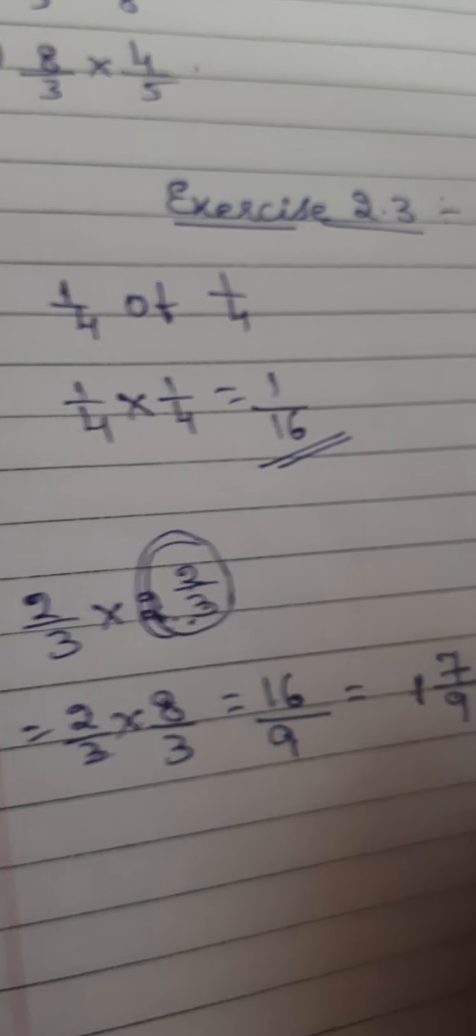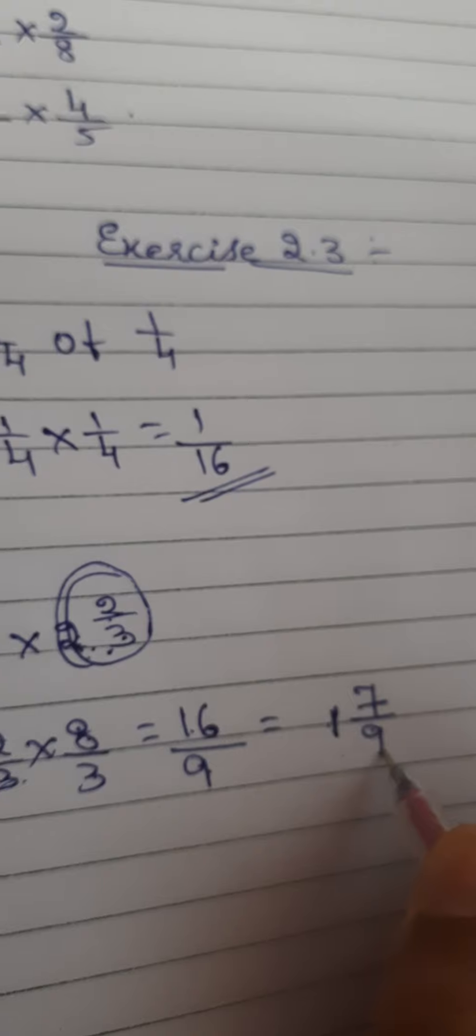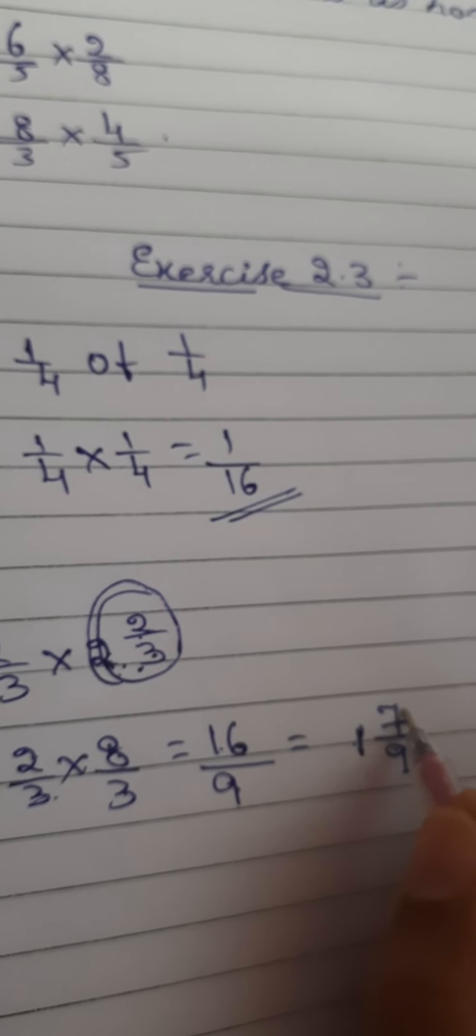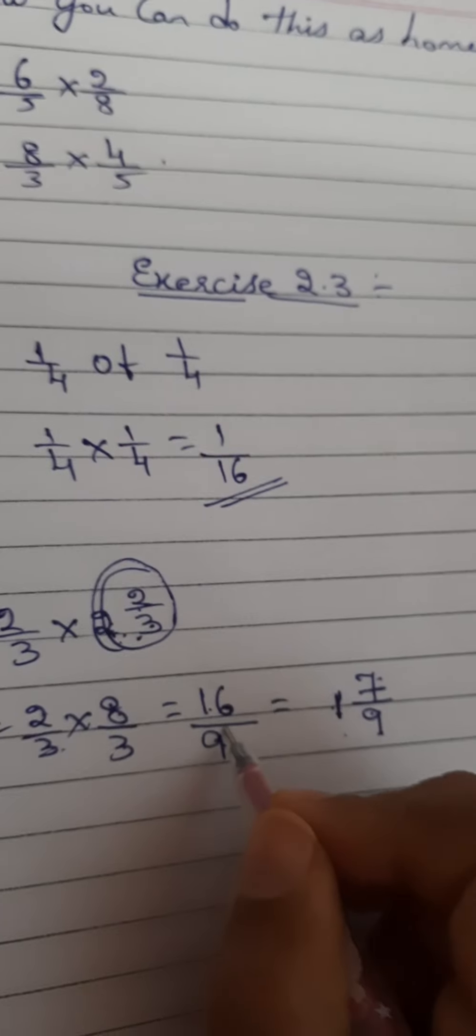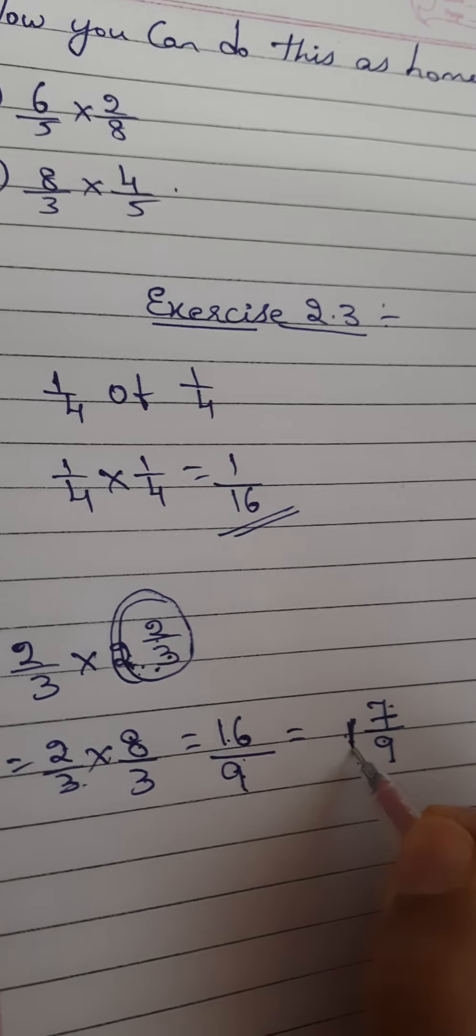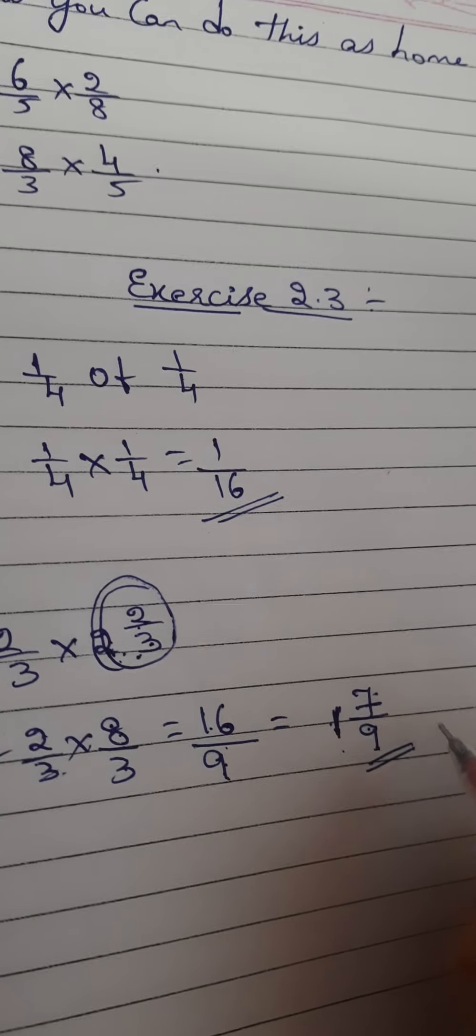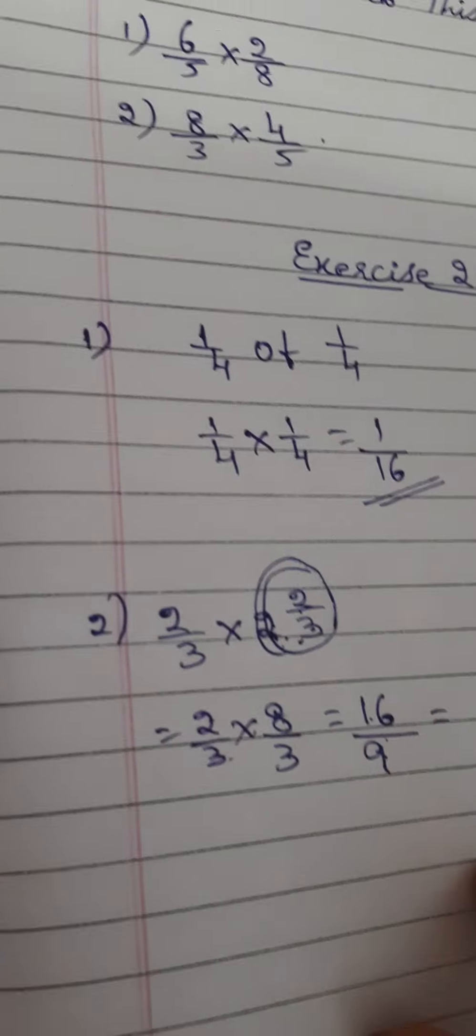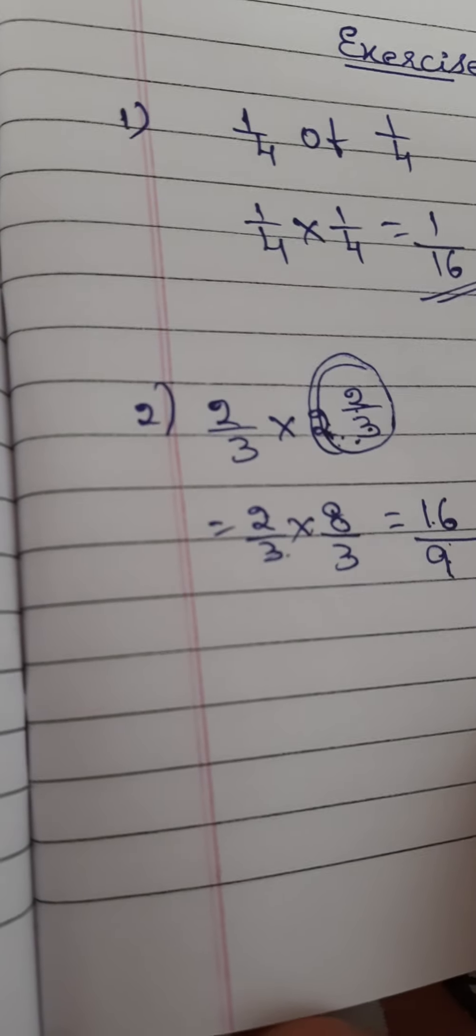How did I get 1 7/9? 1 × 9, how much? 9. 9 plus 7, how much? 16. So here it is 16/9. So the lowest form is 1 7/9. I have solved one problem, now you can solve the rest.